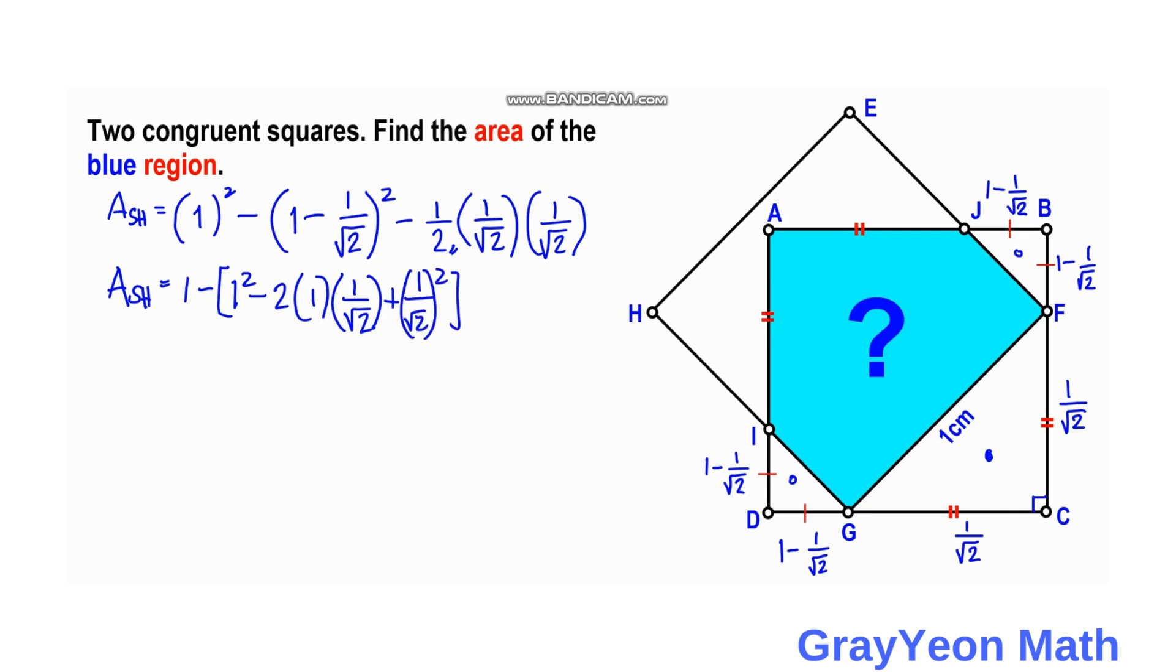Then we need to subtract this, so this becomes 1 half times 1 half, so this becomes 1 fourth. So simplifying the inside of this squared binomial: 1. This becomes 1 minus—this becomes 2 divided by square root of 2 is square root of 2—and this becomes 1 half, so plus 1 half.